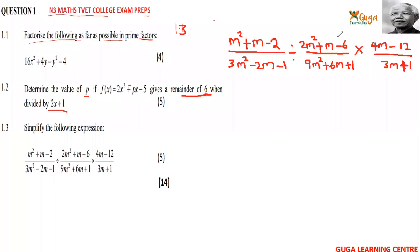The last question: simplify (m² + m − 2) over (3m² − 2m − 1), divided by (2m² + m − 6) over (9m² + 6m + 1), then multiplied by (4m − 2) over (3m + 1).